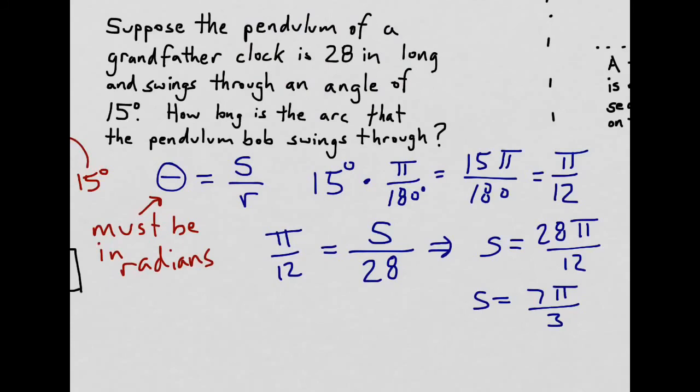Of course, with a calculator, we can get a number value for this. Entering 7 pi over 3 into your calculator means that the value for s is approximately 7.33. And because the radius value is in inches, this is also going to be in inches.